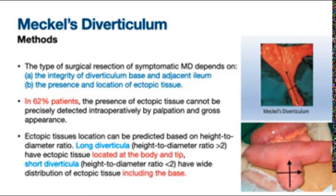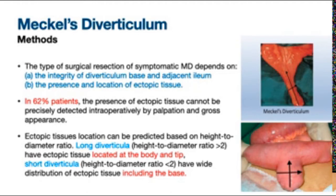In long diverticula with a height-to-diameter ratio greater than two, ectopic tissue tends to be located at the body and the tip. In short diverticula with a height-to-diameter ratio less than two, ectopic tissue tends to have a wider distribution, including at the base.